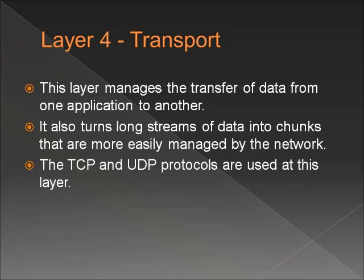The transport layer manages how data is transferred across the network. To do this easily, it turns long streams of data into chunks. These chunks include features such as error checking to make sure the data stays the same once it's delivered. The transport layer also controls what's called flow control, which makes sure the receiver isn't given more data than it can handle — for example, you can put more water in a glass than it can hold. At this layer are also the TCP and UDP protocols. The transmission control protocol, or TCP, provides reliable ordered delivery of a stream of bytes from a program on one computer to another program on another computer. UDP, or user datagram protocol, transmits data packets without error checking and as such can be unreliable.